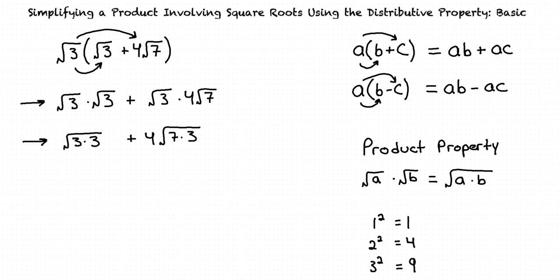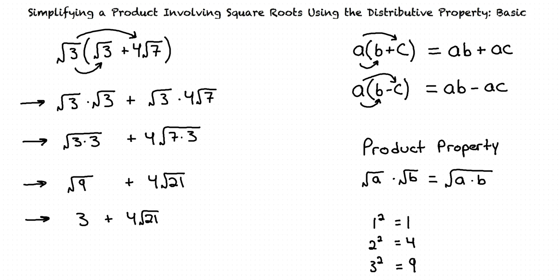Again, using the product property of square roots, we rewrite our expression as the square root of 3 times 3, plus 4 times the square root of 7 times 3. Multiplying the numbers under each square root results in the square root of 9 plus 4 times the square root of 21. The square root of 9 is equal to 3.